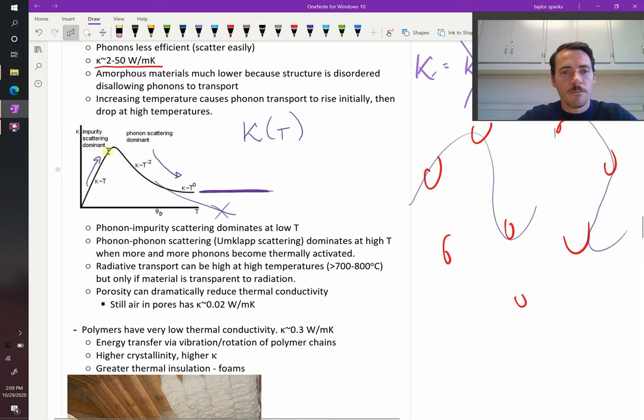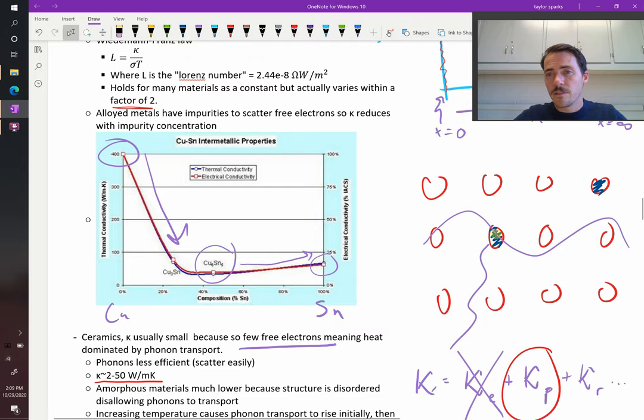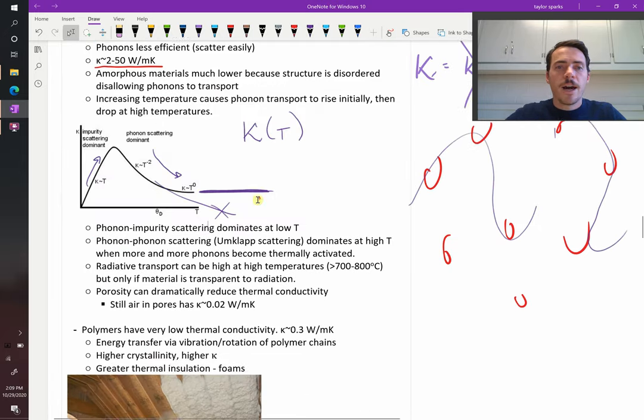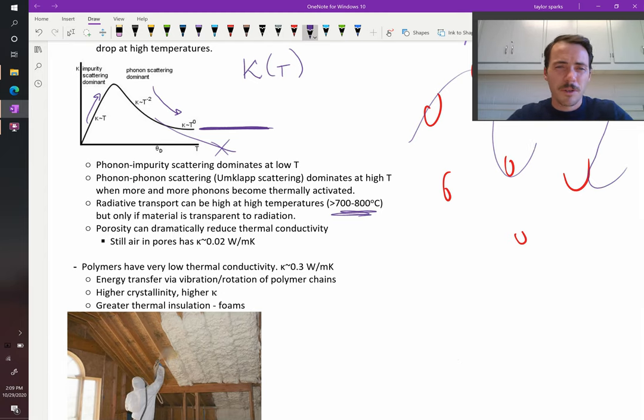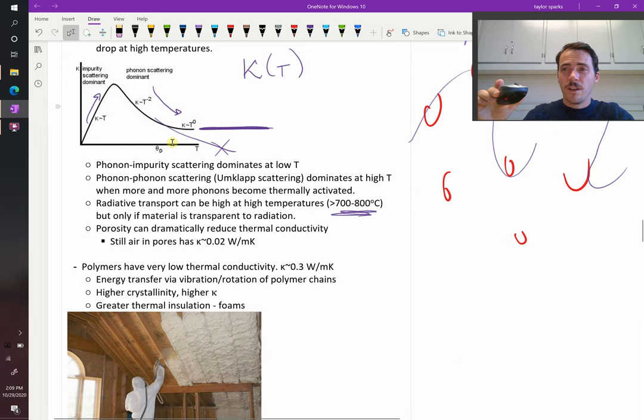We call this phonon impurity scattering at low temperatures. Any phonon that gets scattered is probably getting scattered off of impurities in the lattice, like dopants. But at high temperatures, we call this umklapp scattering—when phonons scatter off of one another. Radiative transport can be significant, but typically it's a high-temperature process. The Stefan-Boltzmann law says you get flux proportional to temperature to the fourth. It really takes off at high temperatures. My mouse, it's not that hot, but if it's white hot, you can really feel that heat coming off.